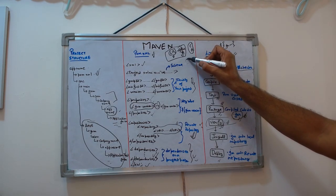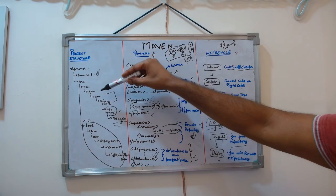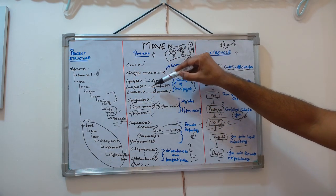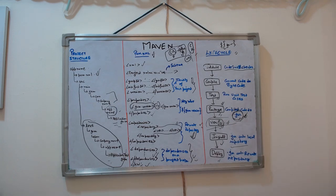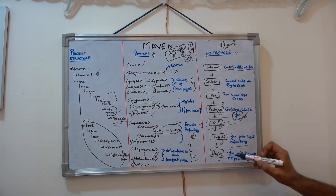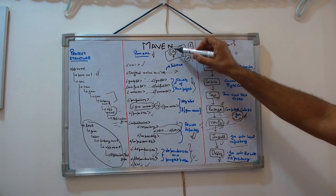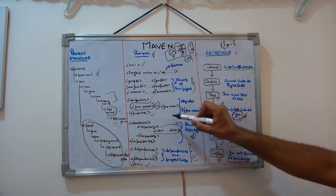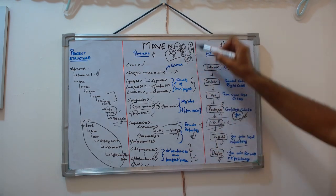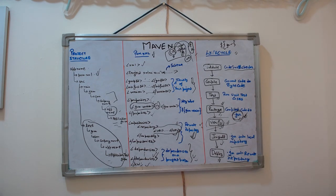Once verified, the install phase deploys the .jar file to your local repository — the .m2 folder on your local machine — under the path matching your groupId, artifactId, and version. The final step is deploy: the .jar file goes to the remote repository. If you're in a company, it goes to your company's Maven repository; otherwise it can go to Maven Central.